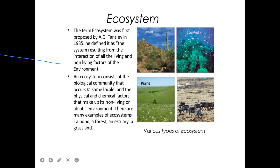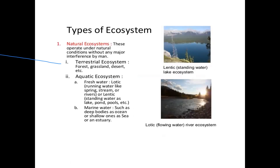An ecosystem consists of the biological community that acts in some local area and the physical and chemical factors that make up its non-living or abiotic environment. Examples of ecosystems include pond, forest, estuary, grassland, desert, coral reef, prairies, and tundra.